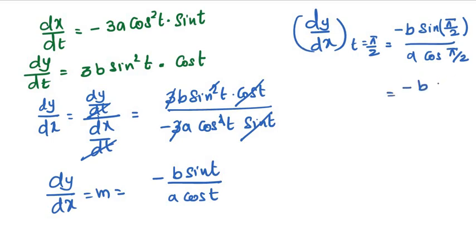Minus b, sin 90 degrees value is 1, cos 90 value is 0. So the value is infinity. m value is infinity.